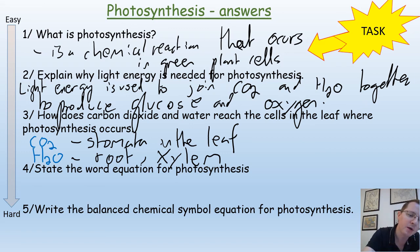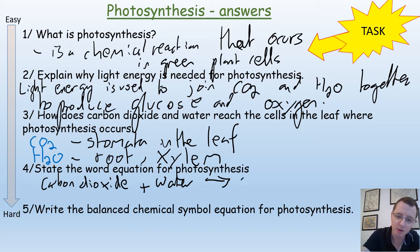State the word equation for photosynthesis. Really simple. We start with carbon dioxide. I'm not taking any shortcuts here because the question tells me to write the word equation. If I write symbols here it would be wrong. So carbon dioxide plus water gives glucose plus oxygen.